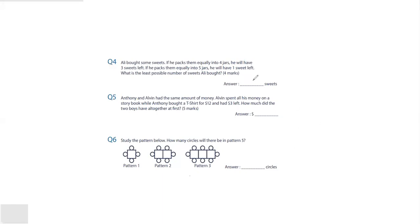Now let's take question number five. Anthony and Alvin had the same amount of money. Alvin spent all his money on a storybook while Anthony bought a t-shirt for $12 and had $3 left. So how much did the two boys have all together? Alvin had 12 plus 3, which is $15. Anthony also had the same amount of money, $15. So together they had $30. My answer is $30.